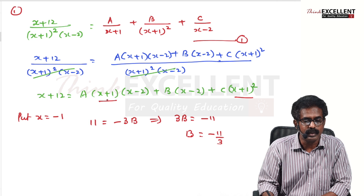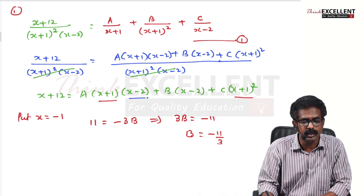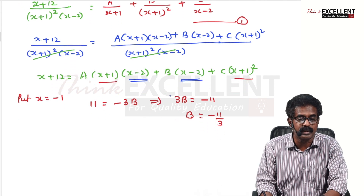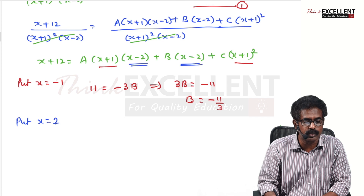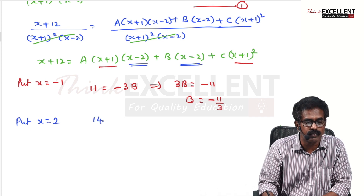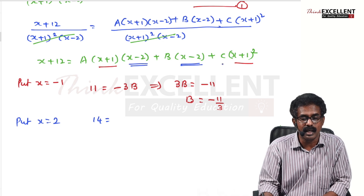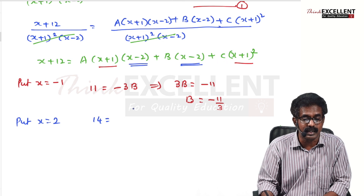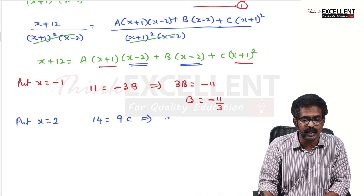Now for the factor (x − 2), put x = 2 to make it zero. The left side gives 2 + 12 = 14. The first and second terms become zero. For the last term, (2 + 1)² = 9, so you get 9C = 14, giving C = 14/9.